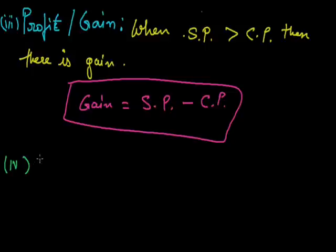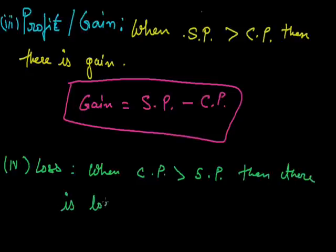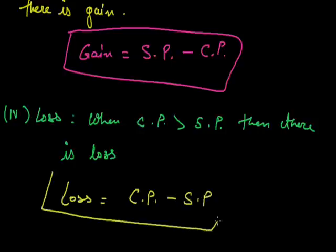Next is loss. Whenever the cost price is greater than the selling price, then there will be a loss. Loss can be calculated by subtracting the selling price from the cost price — that is, cost price minus selling price. Now let us understand these two with the help of examples.